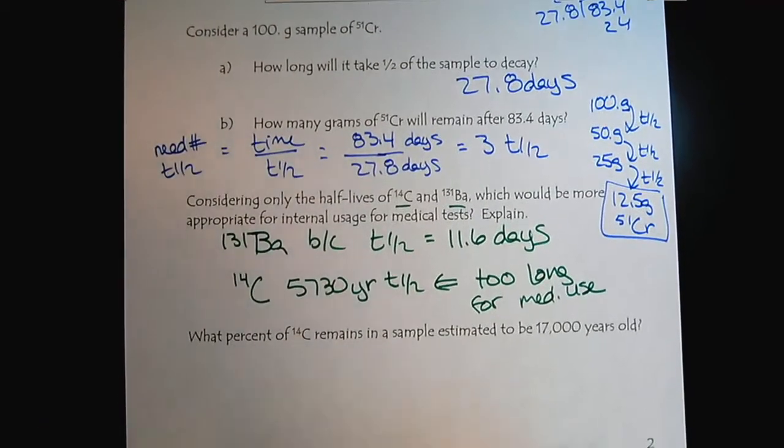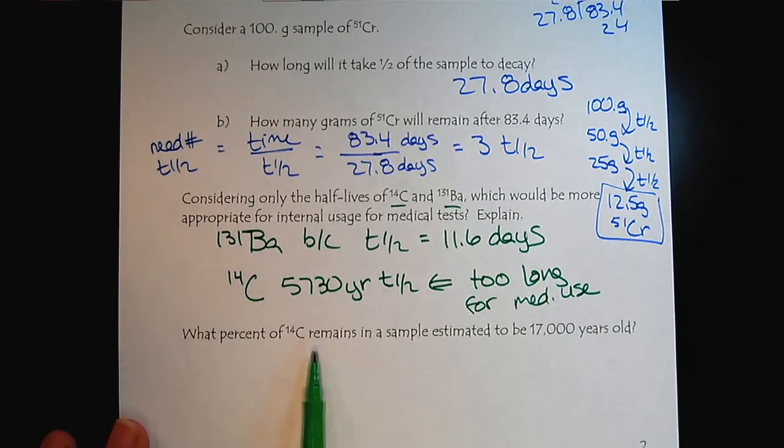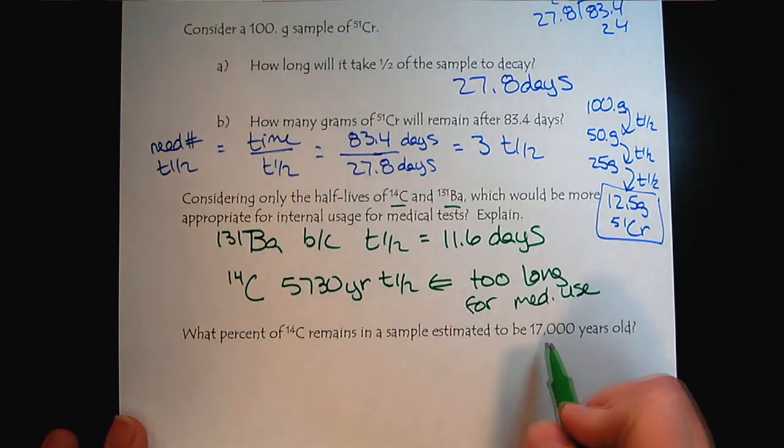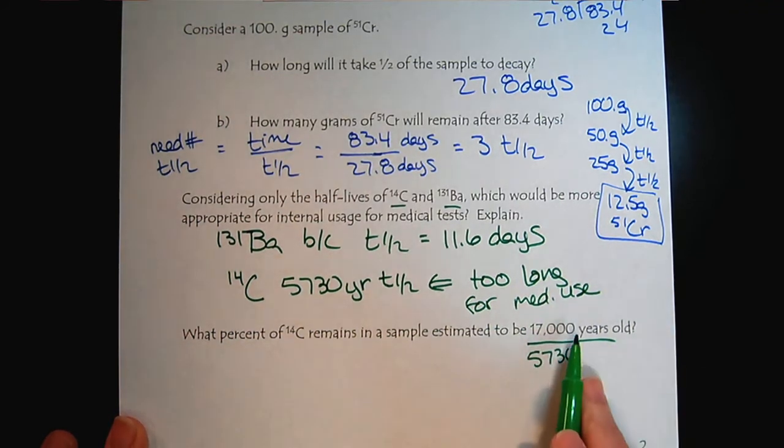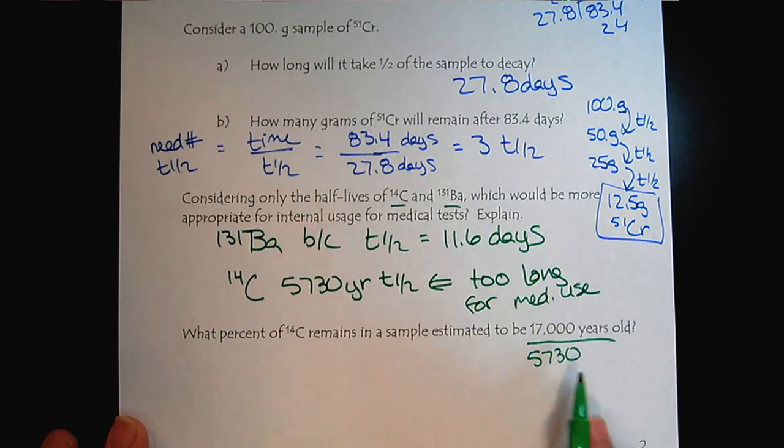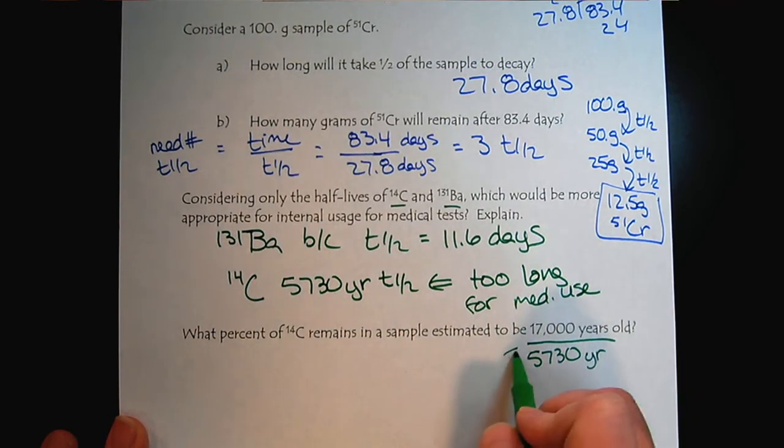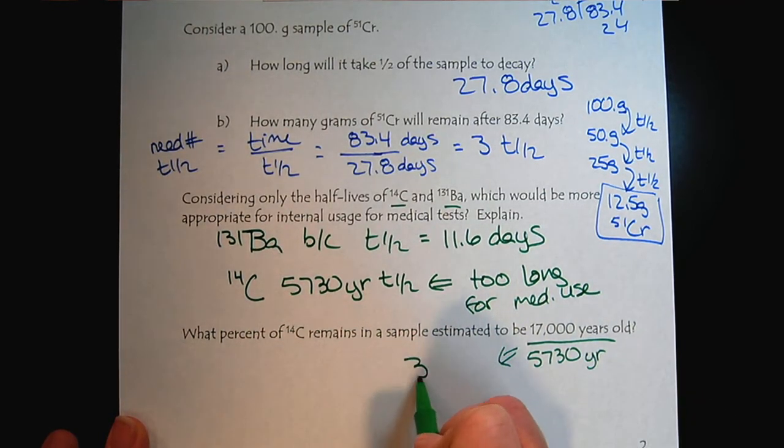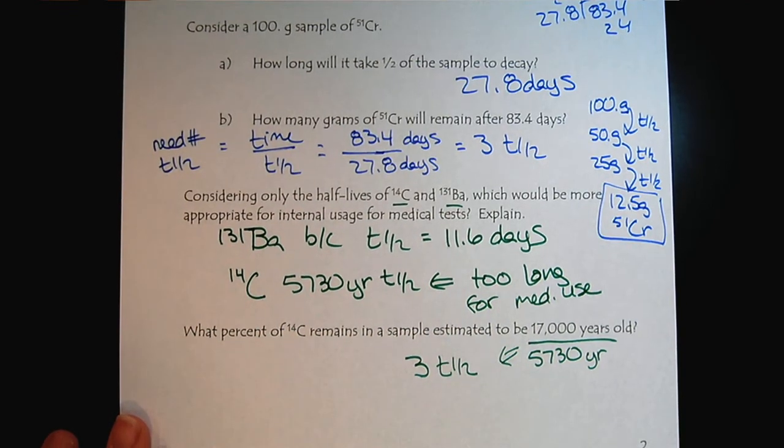Now let's look here. So what percent of carbon 14 remains in a sample estimated to be 17,000 years old? Well, once again, we look at the number of half-lives. So here's the time divided by the half-life. And once again, we see that we have about three half-lives.